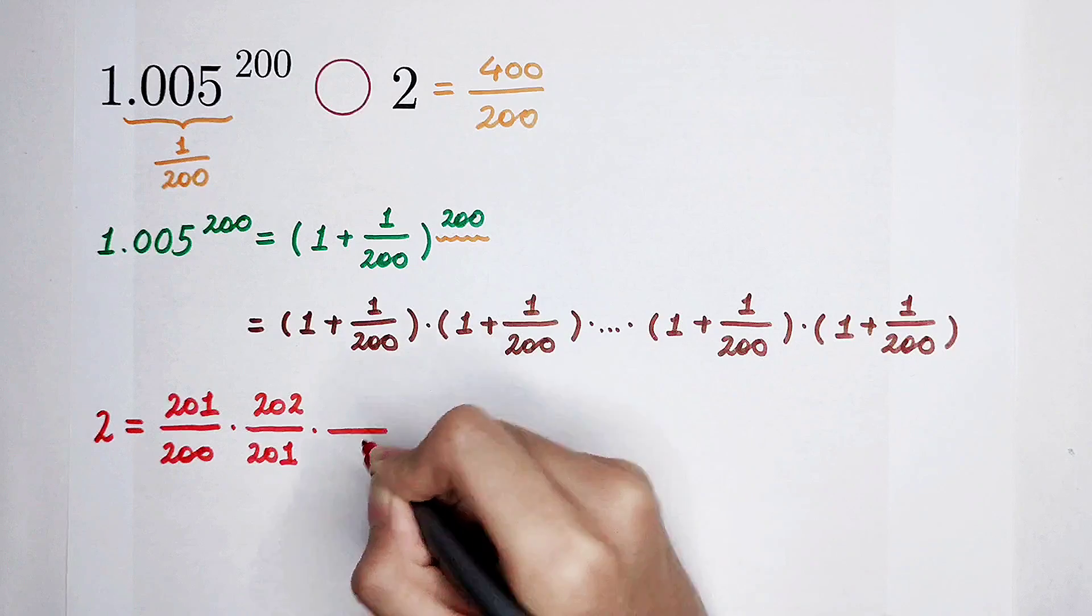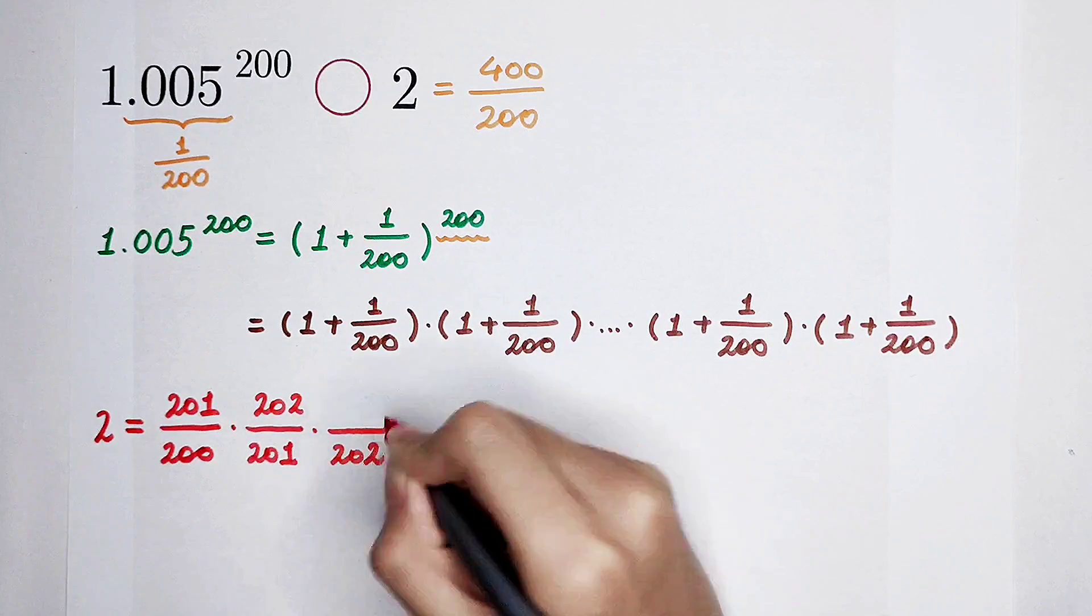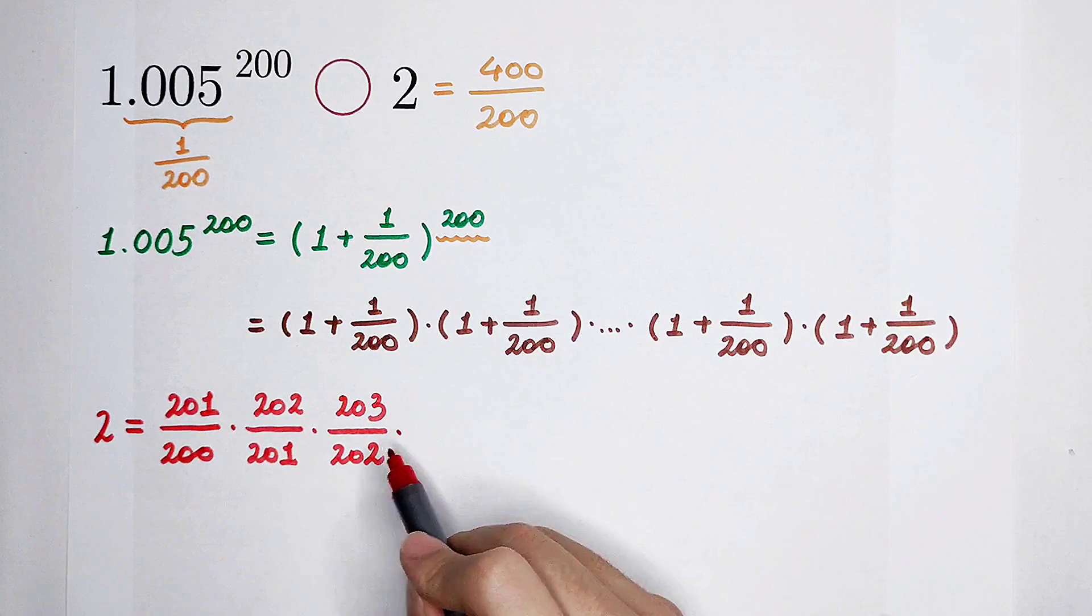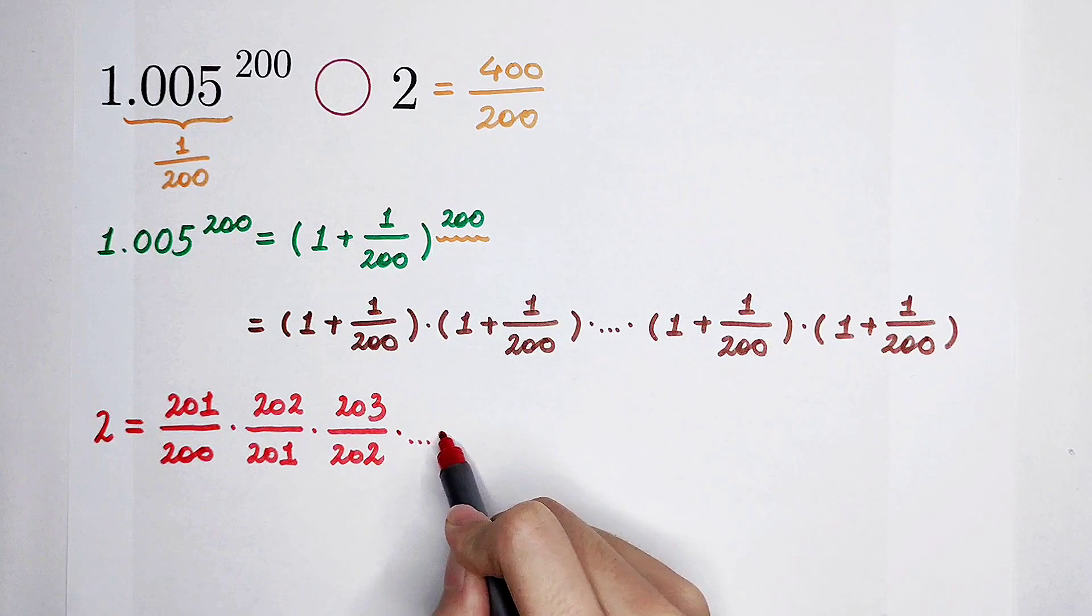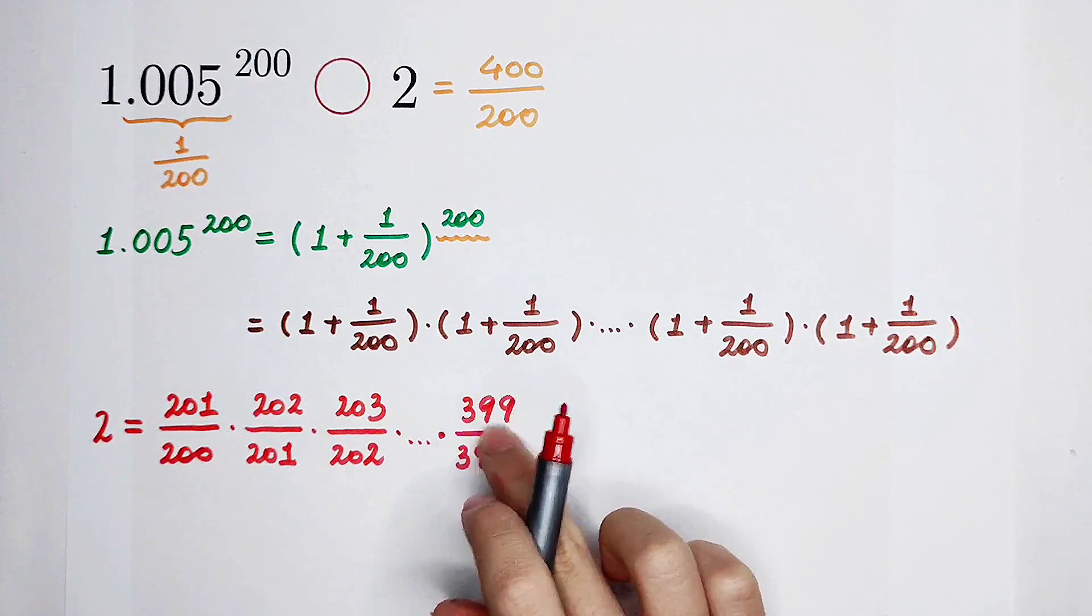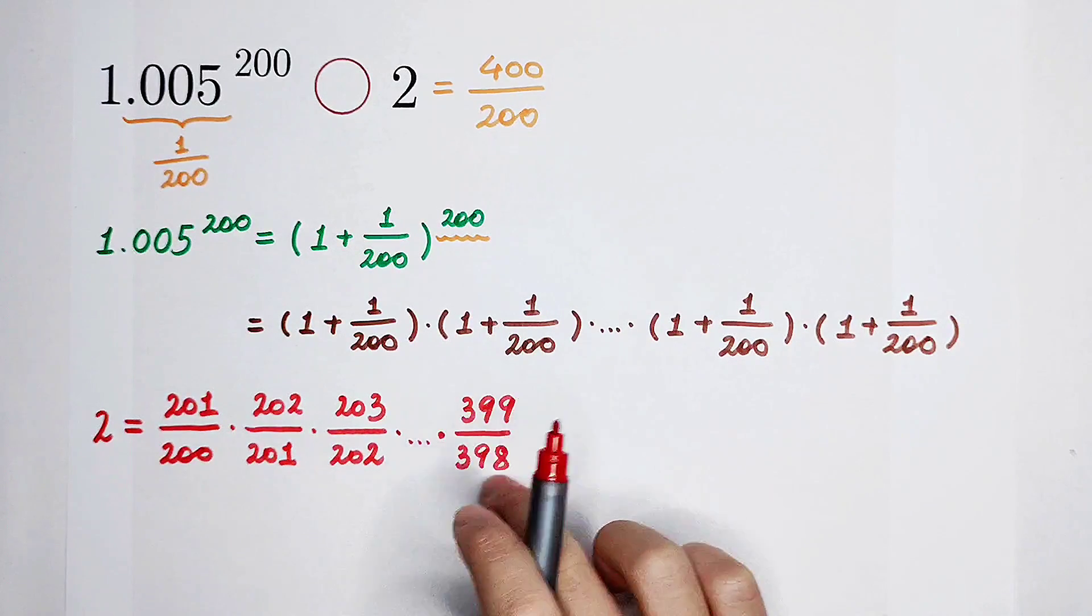The third one, the denominator is 202. Therefore, I can cancel this 202. And the numerator is 203. For the first term, it is 204 divided by 203. So long. And the last, or the number which before the last one, the numerator is 399, and the denominator is 398.